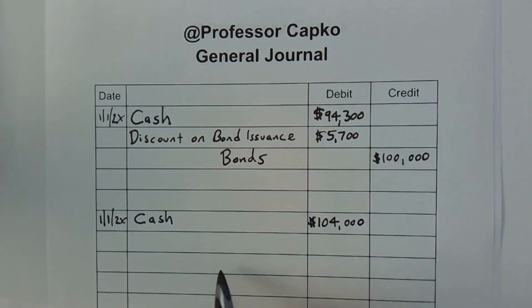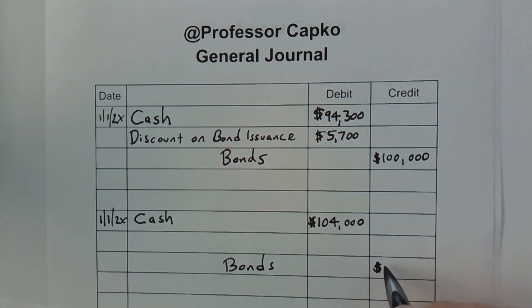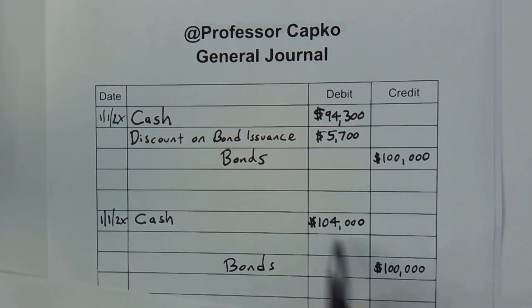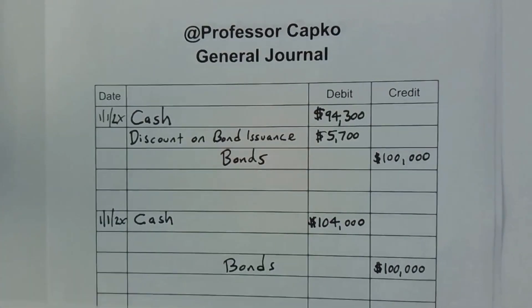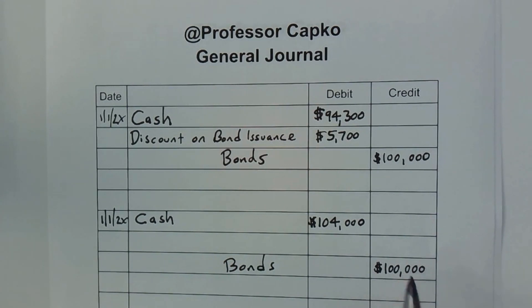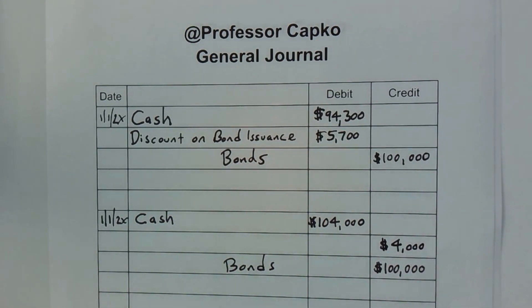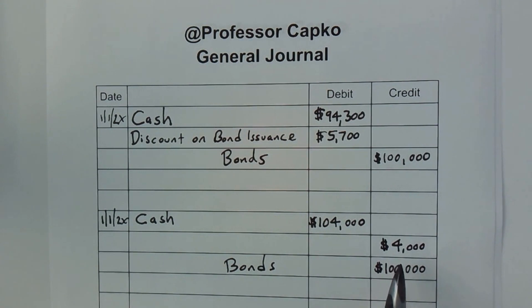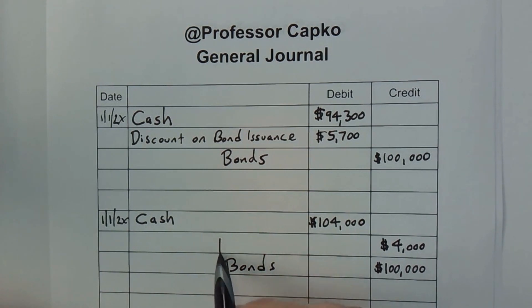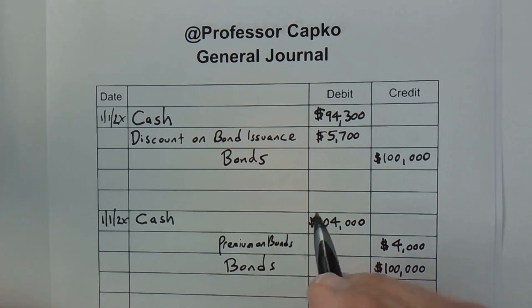So I'm going to put bonds payable as a credit for $100,000. Of course these two don't balance — we have a $4,000 difference and that's the amount of our premium, so we need more on the credit side. I'm going to put the $4,000 on the credit side and since it is a premium I'm going to call that credit 'Premium on Bonds Issued.'